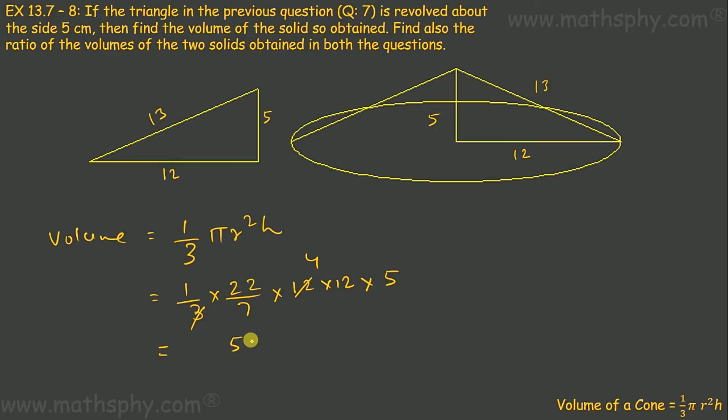Which is 5280/7, which gives me 754.29 cm³. So that's the volume of this cone obtained from this triangle rotated 360 degrees on this side which is 5 centimeters high.